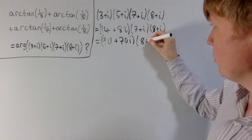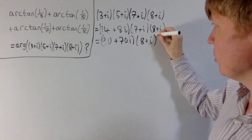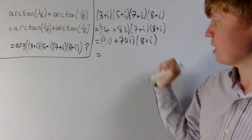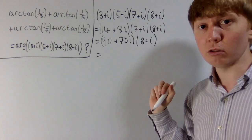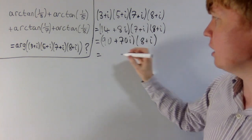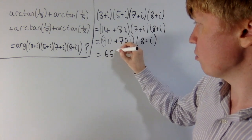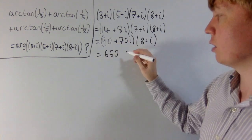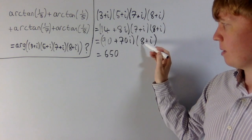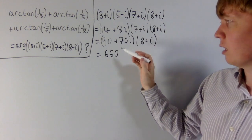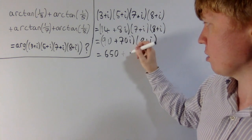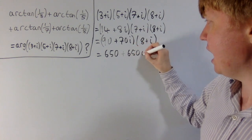Finally we multiply by (eight plus i). The numbers are getting a bit bigger: ninety times eight is seven hundred and twenty, minus seventy from the seventy i times i term, giving six hundred and fifty as the real part. For the imaginary part, seventy times eight is five hundred and sixty, plus ninety, which gives six hundred and fifty i. So the final result is six hundred and fifty plus six hundred and fifty i.